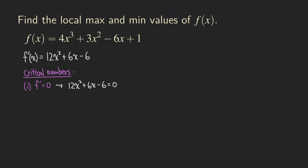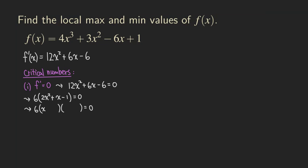We can factor out six from all the terms, and we are going to get six times 2x squared plus x minus one, and that's equal to zero. Now we can factor this trinomial 2x squared plus x minus one as a product of two binomials. We need two terms that will multiply to 2x squared, so that would be x and 2x.